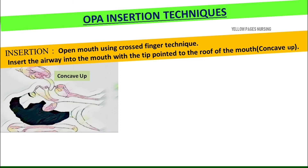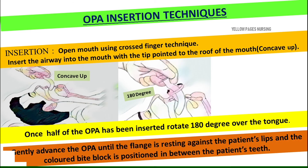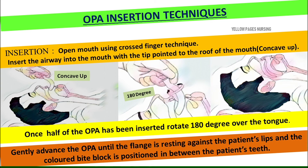When you look at the picture, the concave portion of the airway touches the roof of the mouth — the palate. Once half of the oropharyngeal airway has been inserted, rotate 180 degrees over the tongue. This technique prevents the airway from pushing the tongue backwards during insertion. Then gently advance the OPA until the flange is resting against the patient's lips and the colored bite block is positioned between the patient's teeth.